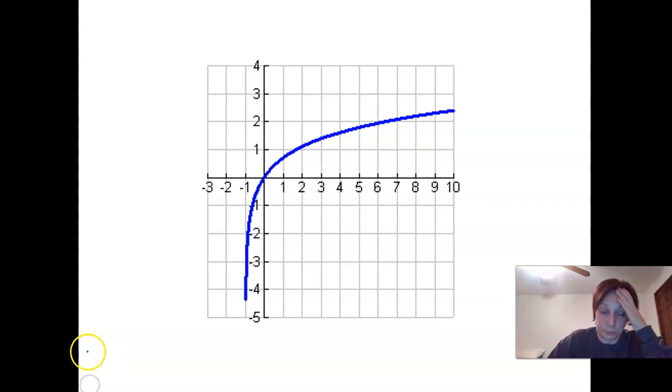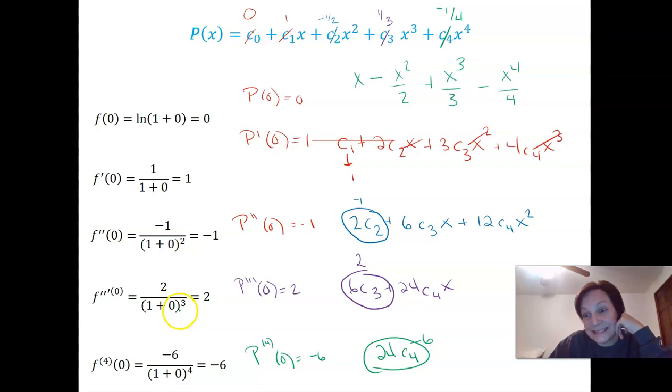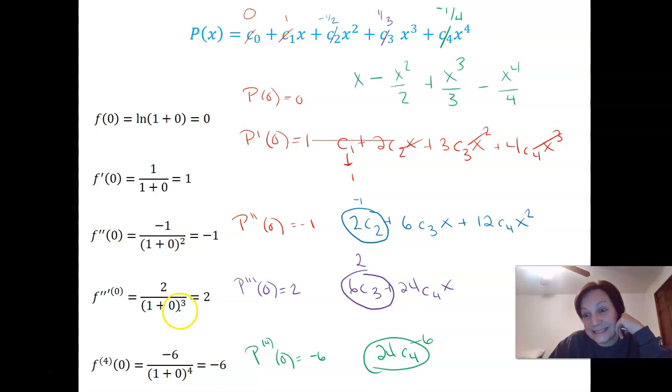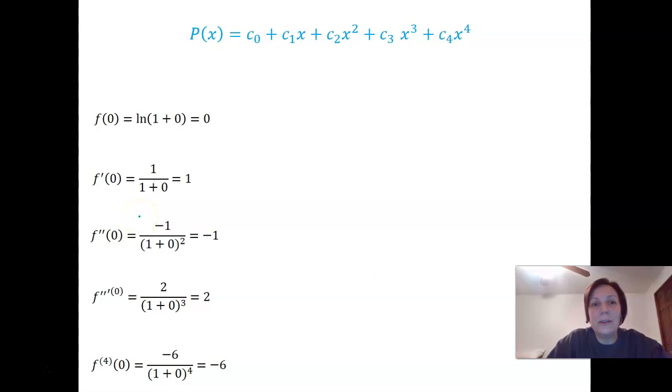Now, for some polynomials, we'll be able to add more terms and make it better. For others, we won't. This is one where we won't. It came from a geometric. Negative 1 to 1 is going to be it for us on this one. Now, what I need to tell you is that what we just did, you never have to do again. Because you may notice that there's a pattern here. So let me illuminate you.